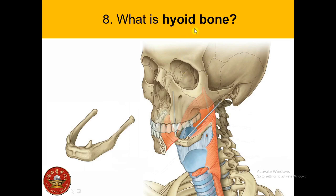What is the hyoid bone? It is a small U-shaped bone oriented in the horizontal plane, superior to the larynx, where it can be palpated side to side. It forms a body, two greater horns, and two lesser horns. An important characteristic is that it does not articulate directly with any other skeletal element. Superiorly it attaches to the floor of the oral cavity, inferiorly to the larynx, and posteriorly to the pharynx.